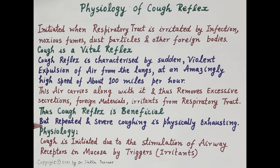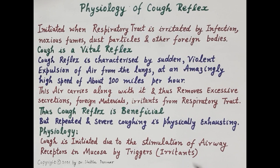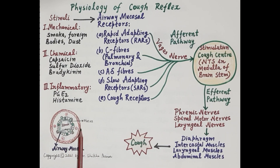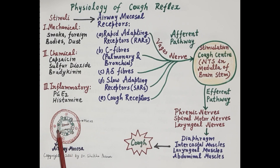Now let's understand the physiology of the cough reflex. Cough is initiated due to stimulation of airway receptors present in the mucosa. These receptors are triggered by irritants. Looking at this diagram of the respiratory airway, which shows the structure of the wall of the respiratory tube, in the center is the lumen — the airway passage for air. The innermost lining of the respiratory tube is made up of ciliated columnar epithelial cells, forming the mucosa.